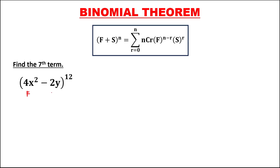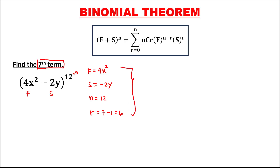For this next given, the first term is equal to 4x to the power 2, and the second term is negative 2y. Then n is the exponent, that's 12. For r, since we're looking for the seventh term, r is equal to 7 minus 1, so r is equal to 6. To find the seventh term: n choose r, so 12 choose 6, then times the first term, 4x to the power 2, to the power n minus r — 12 minus 6 — then times the second term, negative 2y, to the power r, which is 6.